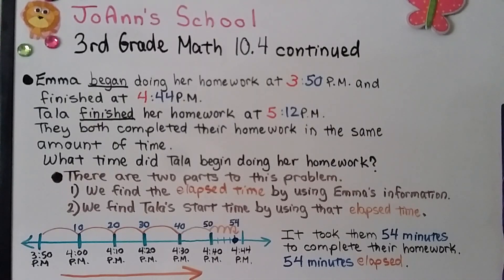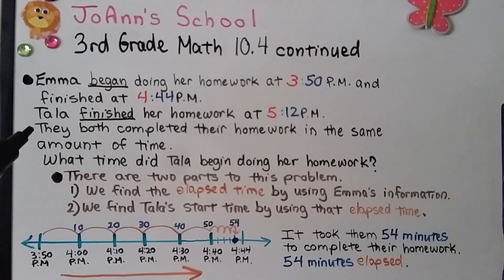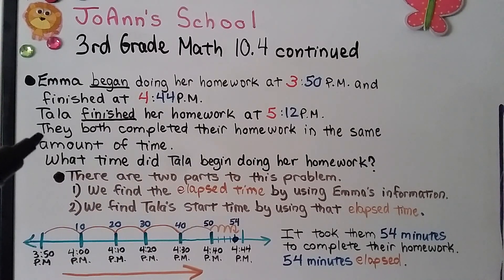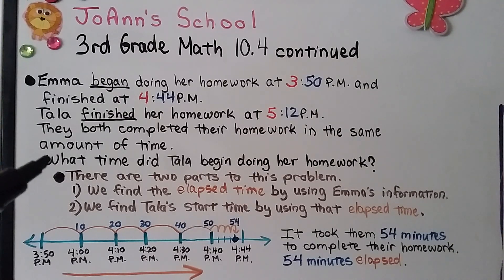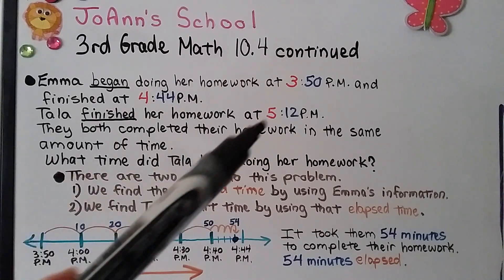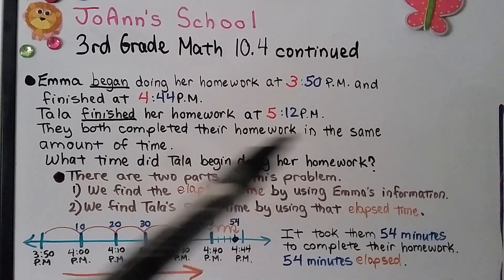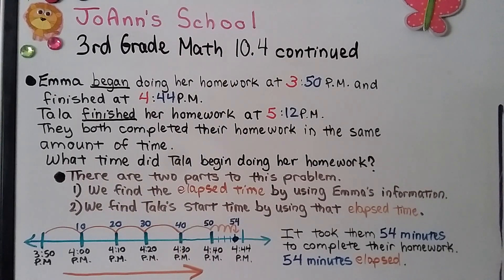Emma began doing her homework at 3:50 p.m. and finished at 4:44 p.m. Tala finished her homework at 5:12 p.m. They both completed their homework in the same amount of time. What time did Tala begin doing her homework? Since they had the same elapsed time, there are two parts: first, find the elapsed time using Emma's information; then use that elapsed time to find Tala's start time.